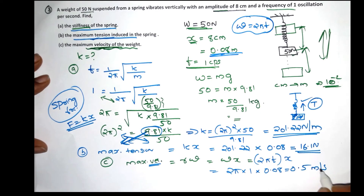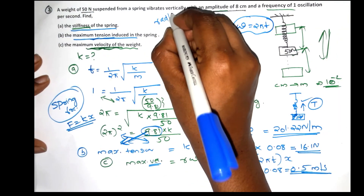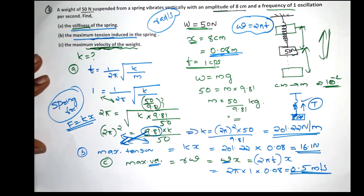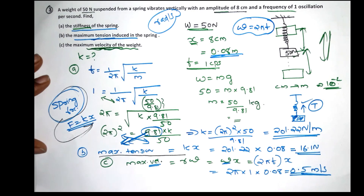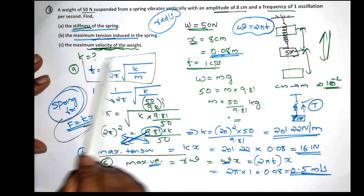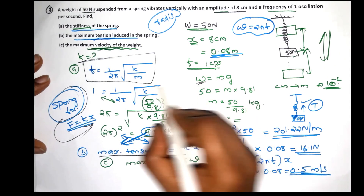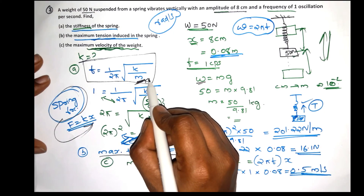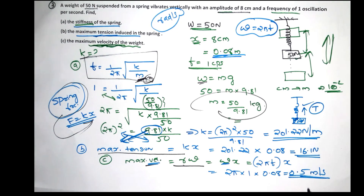The maximum velocity equation is v_max equals omega times x, where x is the amplitude. The angular velocity omega equals 2π times f. With f equal to 1, omega equals 2π radians per second. Substituting gives the maximum velocity in meters per second.